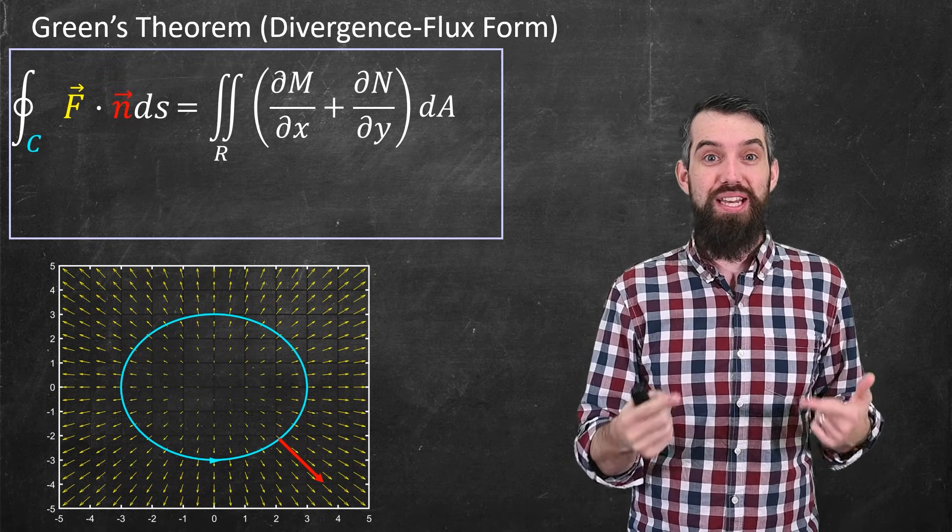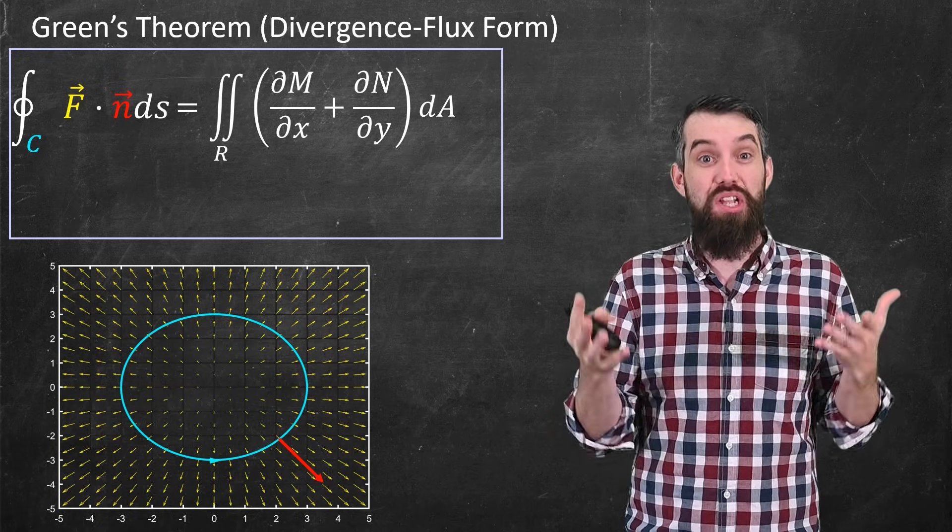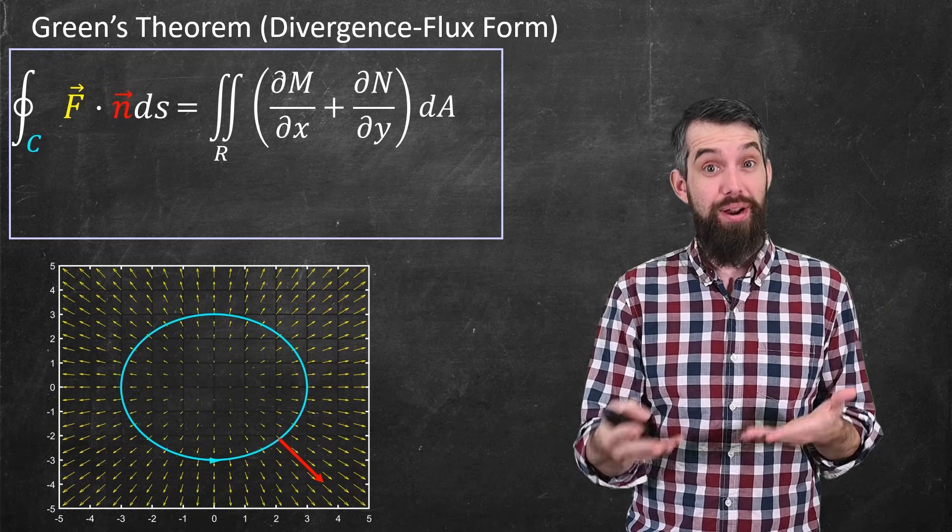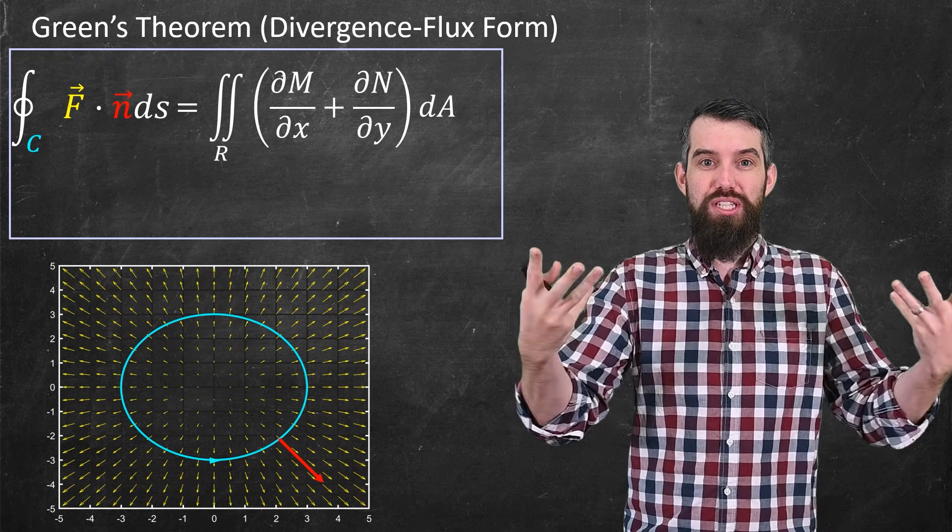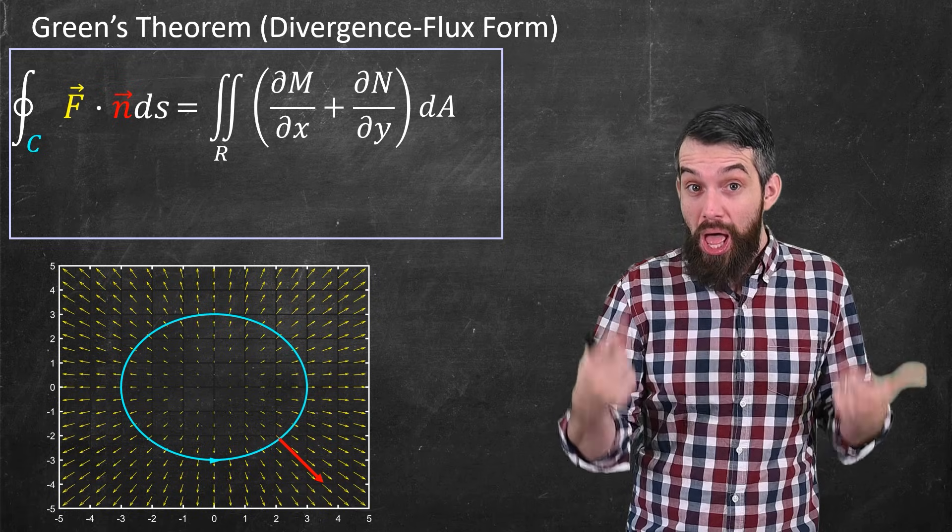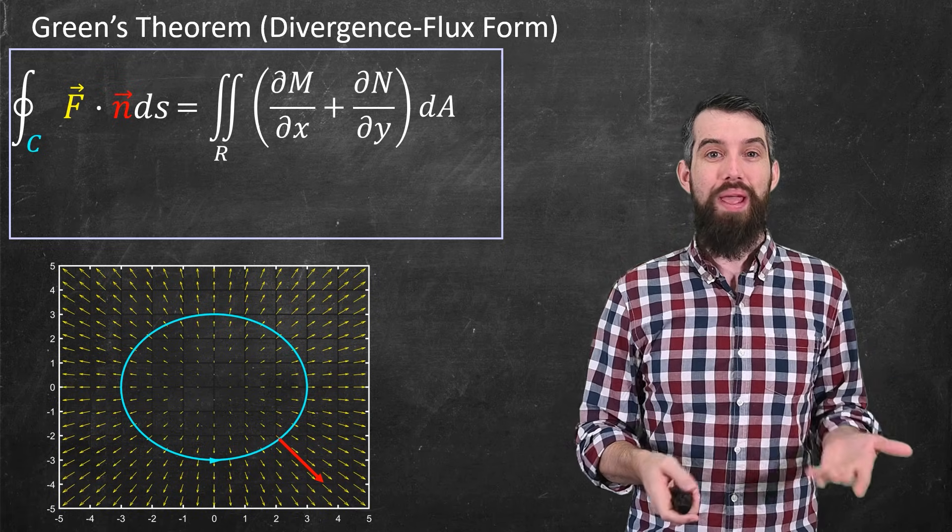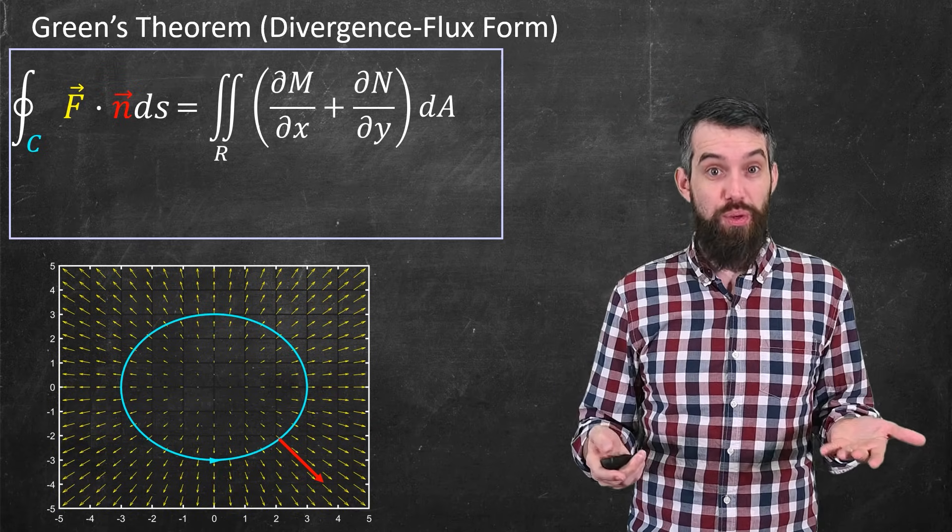So Green's theorem in its divergence or flux form is all about the flux across a curve. So I'm imagining now I have a bonafide curve, not the small little infinitesimal one. We have an actual big curve. It's got a normal vector at any point. And the question is, how much is the field spreading out across the boundary of this curve? How much is the field aligned normal to this curve? And so what we have is this comparison between the boundary.